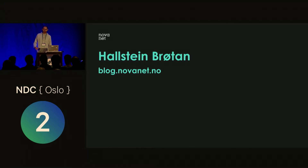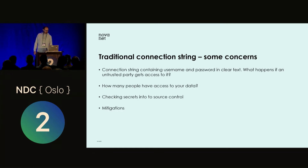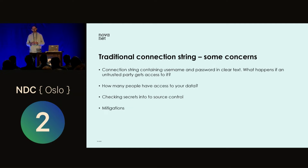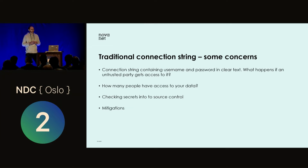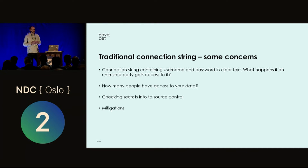I've also written a blog post about this, so if you want the details later you can go to the Novanet blog. Traditionally, the connection string to the database contains both username and password in clear text — that's a security risk. You might lose this connection string and you don't really know how many people have it, so you don't really know who can access your database, which is very bad.